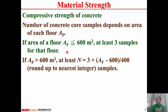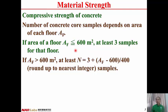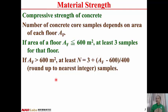If the area of a floor is less than 600 square meters, at least three samples for that floor have to be taken. If the floor area is larger than 600 square meters, at least N samples, where N equals 3 plus (AF minus 600) divided by 400. The number is rounded up to the nearest integer.